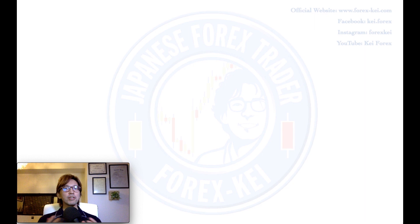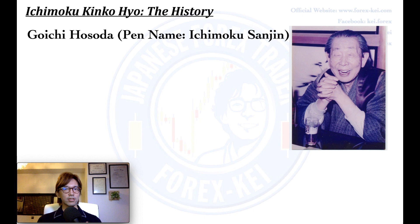Alright, so first, the real name of the inventor is called Goichi Hosoda, and his pen name was actually called Ichimoku Sanjin. Like Forex K myself — of course my real name is not Forex K, it's Keita. But I just thought K sounds easier to pronounce for you guys, so I just named myself Kei.